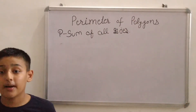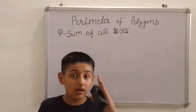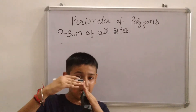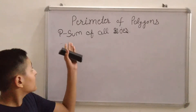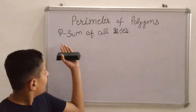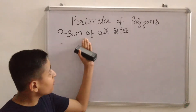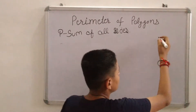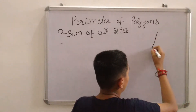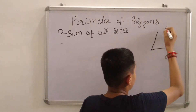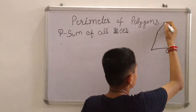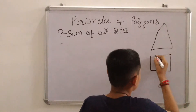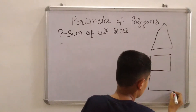What do I mean by a polygon? A polygon is a geometrical shape made with straight lines. The formula for perimeter is the sum of all sides. Today we are taking the polygons: one as triangle, second as square, and third as a rectangle.